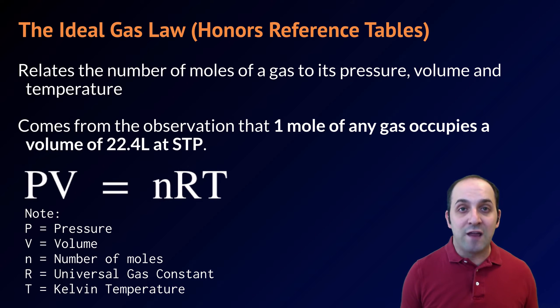The ideal gas law is given as PV equals nRT, where P and V are pressure and volume, n is number of moles, R is the universal gas constant, and T is the Kelvin temperature. You're already familiar with pressure, volume, n for number of moles, and T for Kelvin temperature.